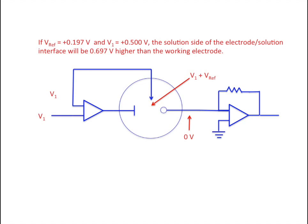Perhaps it'll be a little bit clearer if we use a concrete example. Our reference voltage is plus 0.197 volts. Let's imagine that the voltage V1 is plus 1.5 volts. So the solution side of the electrode solution interface will be 0.697 volts higher than the working electrode voltage.